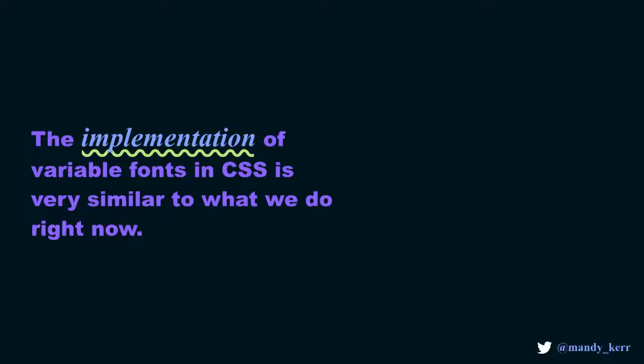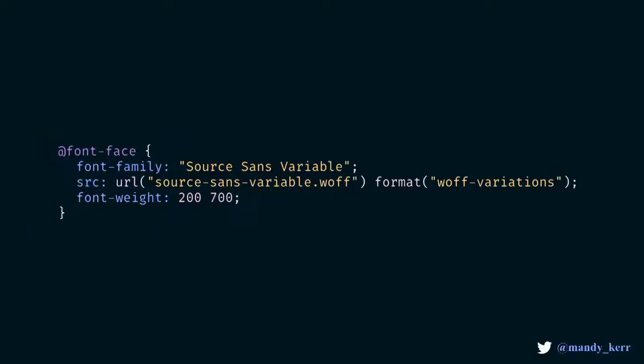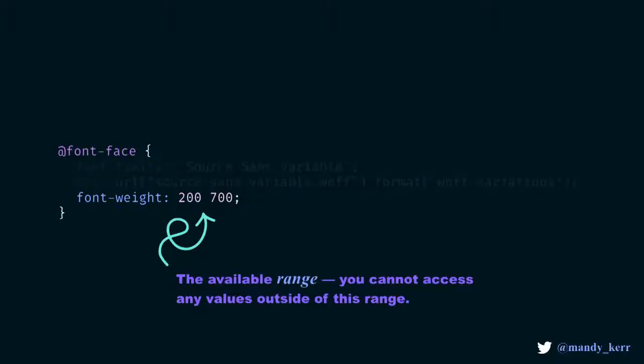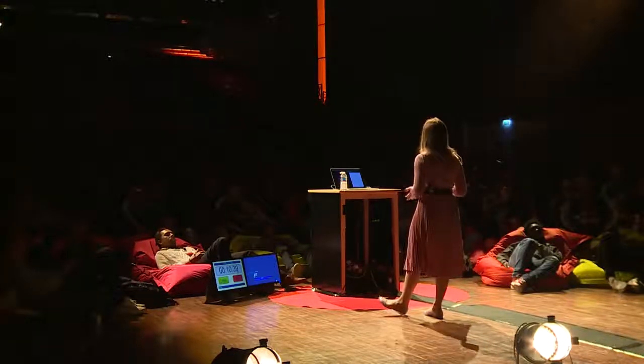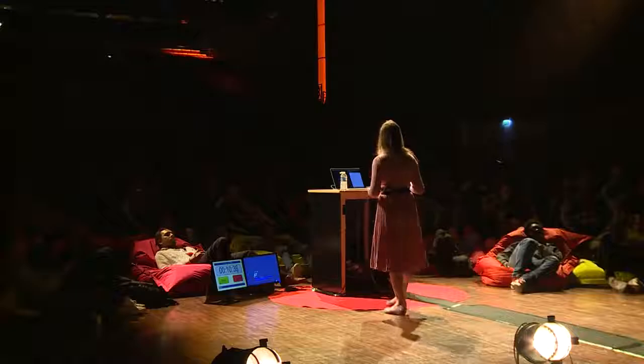The way that we use variable fonts in our CSS is pretty much the same as we use fonts now. For the most part, we set up the fonts using font-face. The main change is how we define variations for descriptors like font-weight, font-stretch, and font-style. Normally, if we have a light version and a bold version, we'd set up two different font-face blocks, one for bold, one for light. But with variable fonts, we don't need to do that. We set up one, we set up the font-weight property, and then we define a range of values — so 200 to 700, for example.